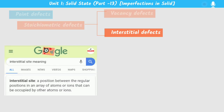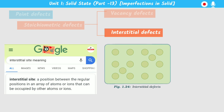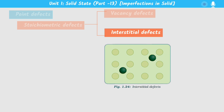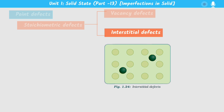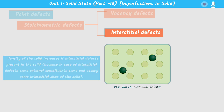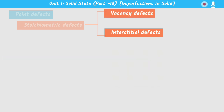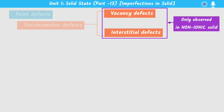In interstitial defects, some molecules, atoms, or constituent particles will occupy interstitial sites. Some constituent particles come from outside to occupy interstitial sites in the crystal, creating defects. Since extra particles occupy interstitial sites, the density of the substance will increase due to these interstitial defects.